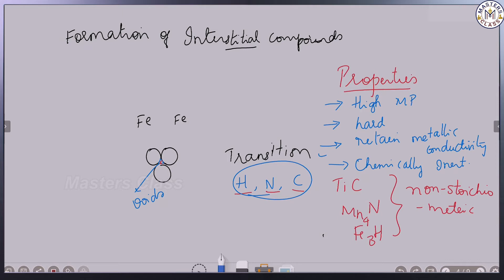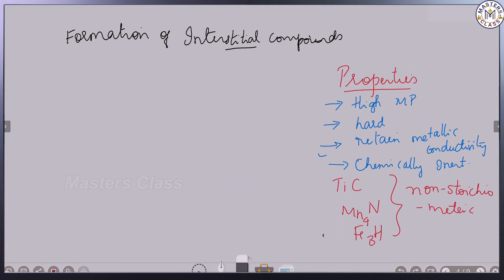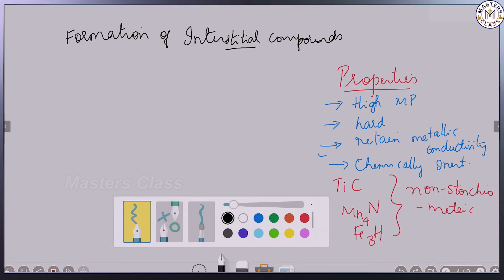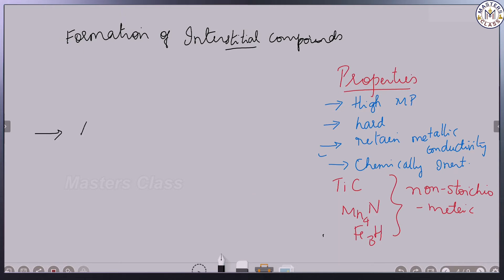They are chemically inert, so we can store them for longer periods of time. These are the interstitial compounds. We have another property to remember for the transition element: alloy formation.